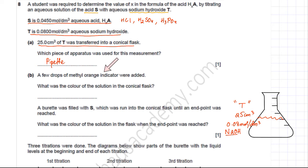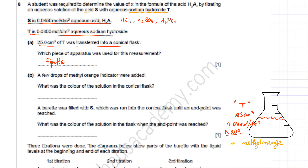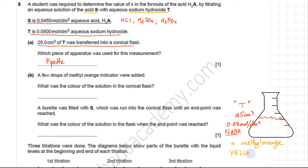After that, a few drops of methyl orange indicator are added. The question asks what color the solution in the conical flask would be. Methyl orange is orange-yellow in alkaline conditions, and since NaOH is an alkali, the initial color of the methyl orange would be yellow or orange-yellow.